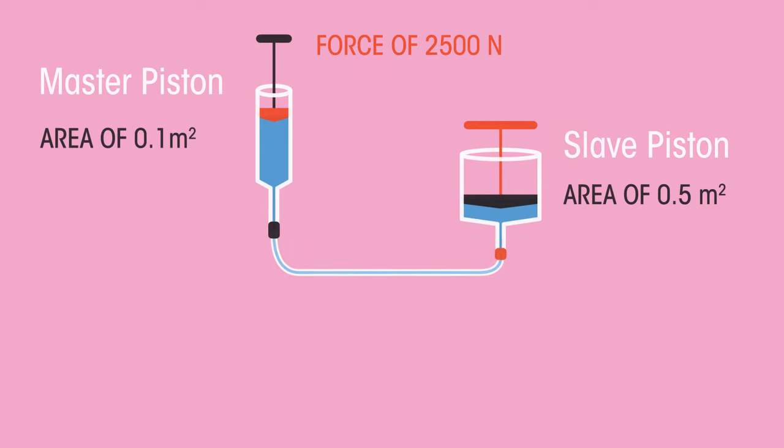Now it's your turn to try an example. A force of 2,500 newtons is applied to a master piston with a surface area of 0.1m². Calculate the force generated in the slave piston with a surface area of 0.5m². Pause the video and work it out.